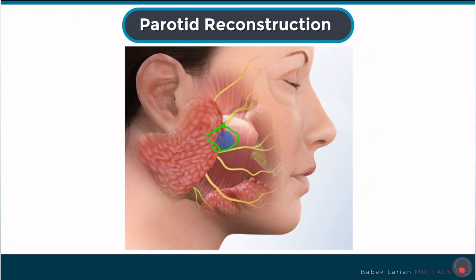And if you have tumors in these areas, then the reconstruction based on the size and proportion can either be a primary closure or using the muscle of the neck. So let's go through this.